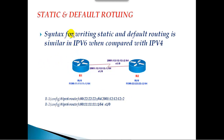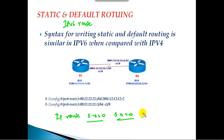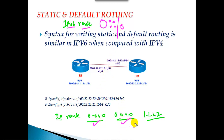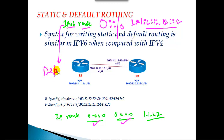For default routing, the syntax is also similar. In IPv4 we say 'ip route 0.0.0.0 0.0.0.0 [next-hop]'. In IPv6, we write 'ipv6 route ::/0 [next-hop]', where '::' represents all zeros and '/0' represents the subnet mask. Then we write the next-hop IP address. This is how we configure default routing, and the concept is the same — to route traffic for any unknown destinations. The concept of static and default routing are exactly the same; only the configuration syntax differs.